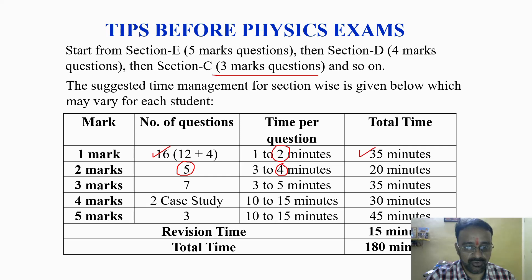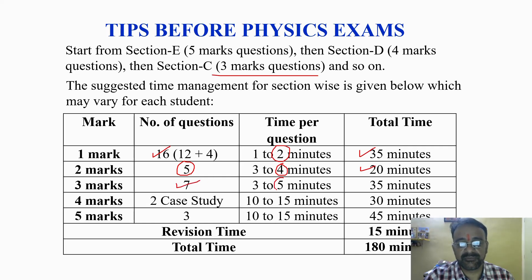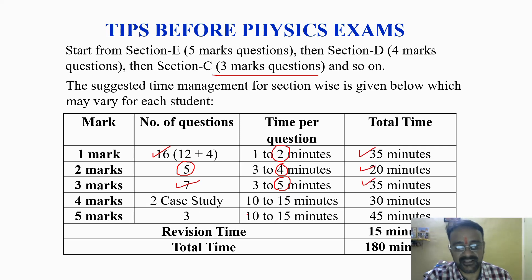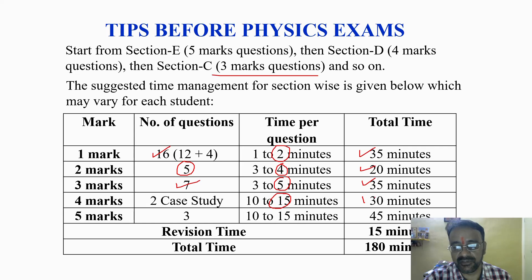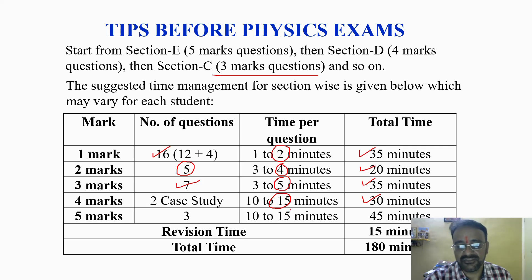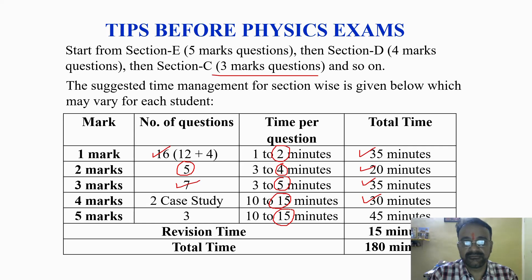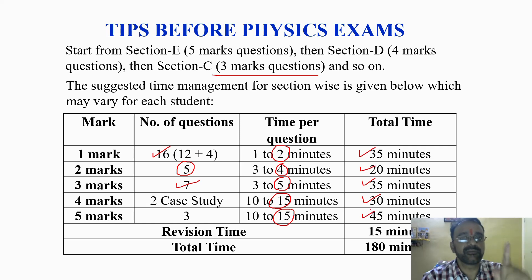For 2-mark questions there are 5 questions, with a maximum of 4 minutes each, so overall 20 to 25 minutes. For 3-mark questions there are 7 questions, with a maximum of 5 minutes each, so overall 35 minutes. For the 2 case study questions, the maximum time for one is 15 minutes, so 30 minutes total. For 5-mark questions, which require a lot of time for diagrams and derivations, the maximum is 15 minutes each, with an overall maximum of 45 minutes, leaving 15 minutes for revision.